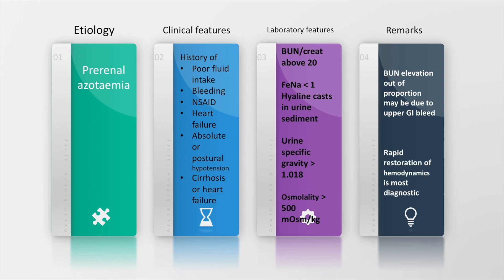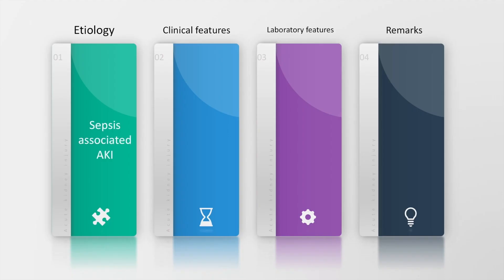Blood urea nitrogen elevation out of proportion to creatinine is a major feature of pre-renal azotemia. However, it may also be present in other hypercatabolic conditions like upper GI bleed. The most common treatment modality is rapid restoration of hemodynamics.